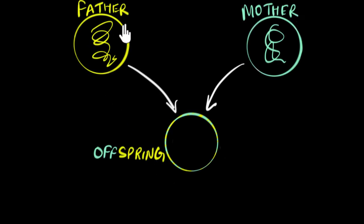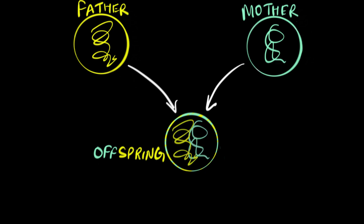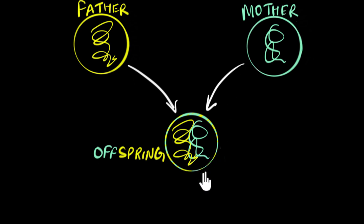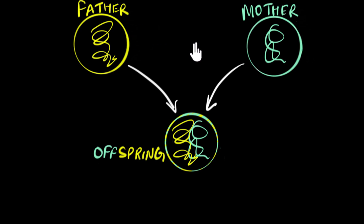In sexual reproduction, we have the cells from two different individuals combining together to give us an offspring, which means that the DNA from two different individuals combine to give the DNA of the offspring. The big question we want to answer in this video is: what happens to the DNA number in the offspring? From the picture, it seems the offspring gets twice the amount of DNA compared to the parent. But that can't be true. If the offspring kept on getting twice the number of DNA, the DNA number would just keep exploding. Somehow the DNA number needs to be maintained the same — the offspring needs to have the same number of DNA as the parents. So how do we do that? That's the big question we're going to answer in this video.